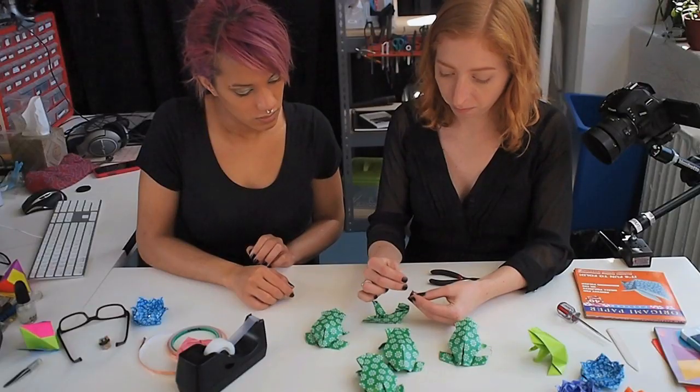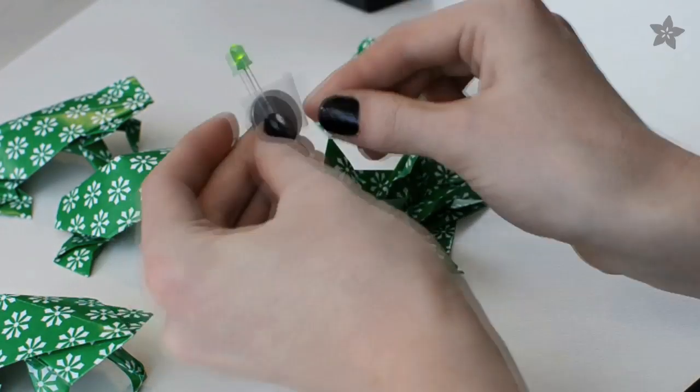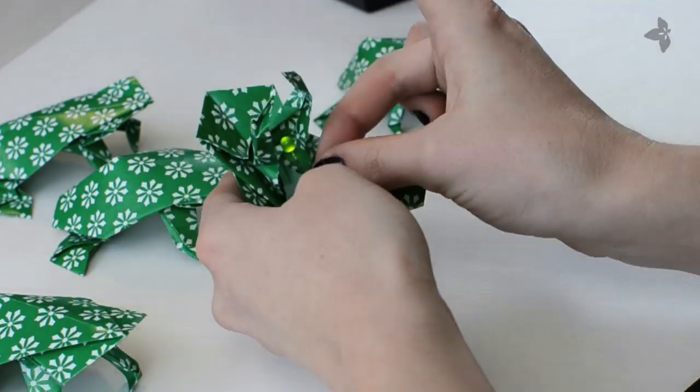Now it's finally time to add the LEDs. Just sandwich the leads of an LED around a battery until it lights up and tape it inside the frog.